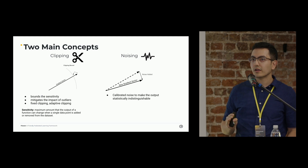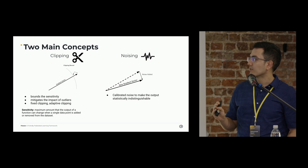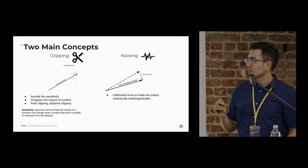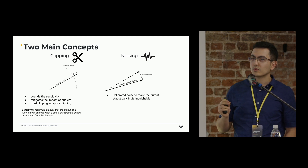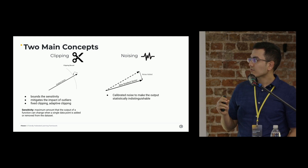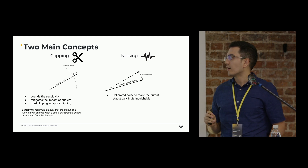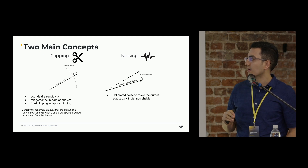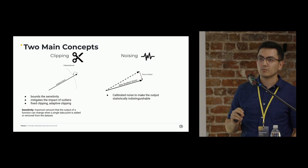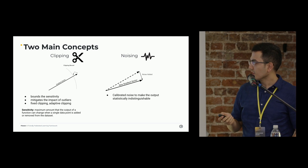There are two main concepts in differential privacy: clipping and noising. Clipping basically bounds the sensitivity — the sensitivity is the maximum amount that the output can change when we add or remove a data point. It also mitigates the impact of outliers. There are two variants of clipping that we focus on: fixed and adaptive clipping. For the noising part, it just adds some calibrated noise to make the outputs indistinguishable.